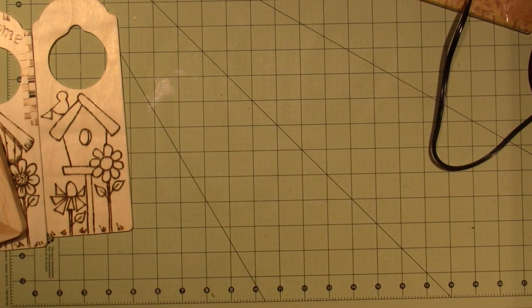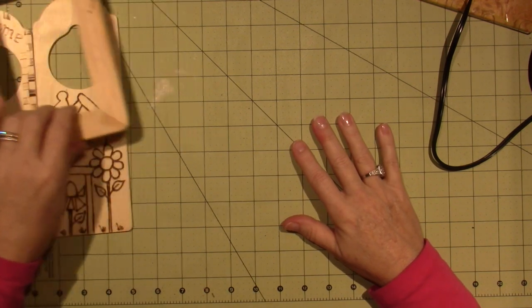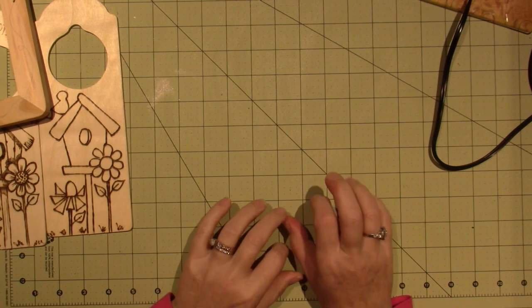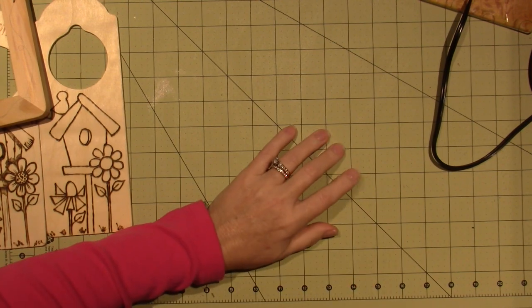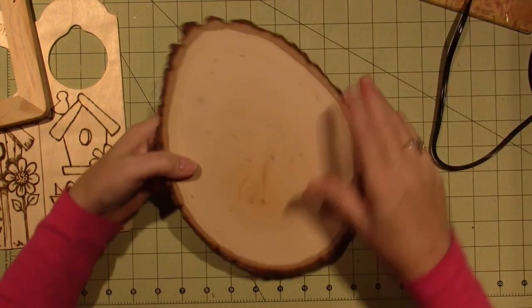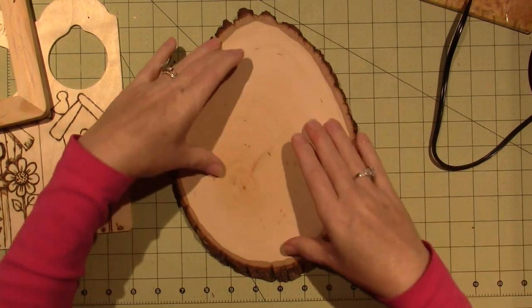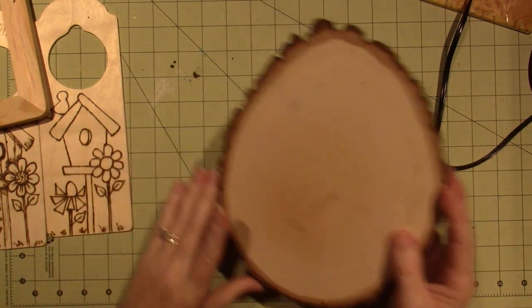Maybe I'll do the hummingbirds again. I also have a nice butterfly pattern that is a stamp too. Maybe I'll just put butterflies on here. That could be cool. Like just different size butterflies all over the place. So we'll see. Look, and I keep getting bark all over.